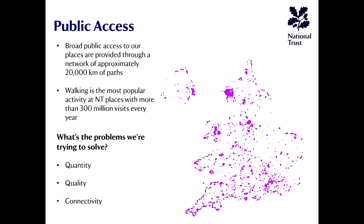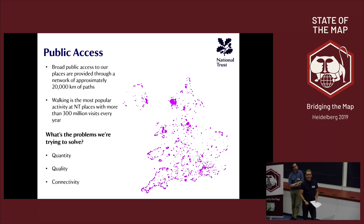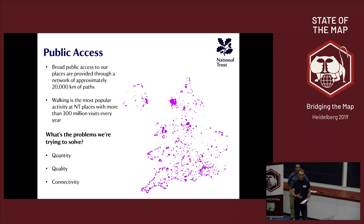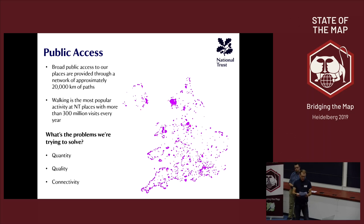We're an access organisation and we provide broad public access to our properties through around 20,000 kilometres of paths. One of the reasons we're doing this project is we don't have any central records or a central database of paths. We know that walking is the most popular activity at National Trust — we think we have around 300 million visits for people walking on our properties. So it's really important that we understand the scale of this asset. The problem we're really trying to solve: first of all, quantity — knowing how many kilometres of paths we look after is important to us.